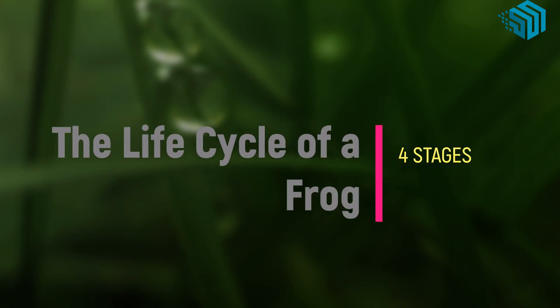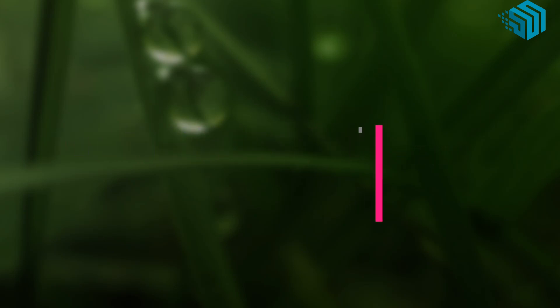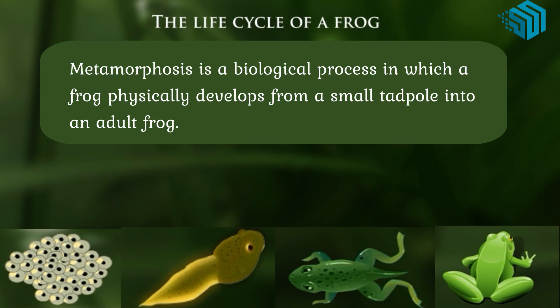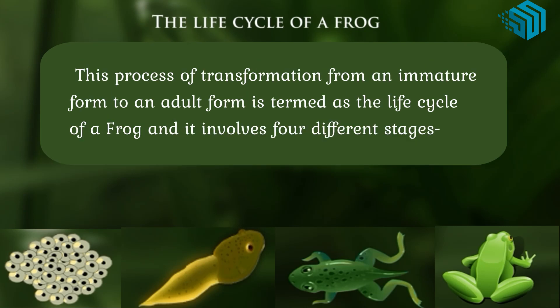Let us begin to learn the life cycle of a frog. Metamorphosis is a biological process in which a frog physically develops from a small tadpole into an adult frog. This process of transformation from an immature form to an adult form is termed as the life cycle of a frog, and it involves four different stages.